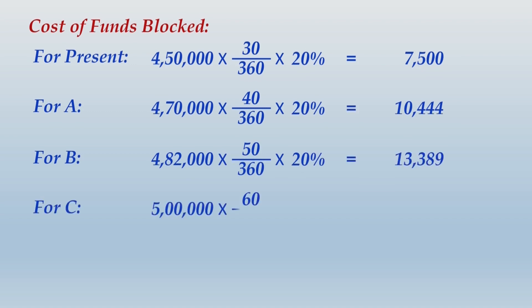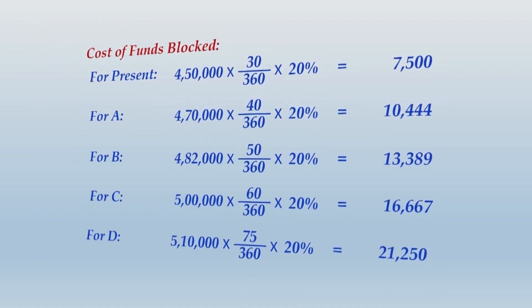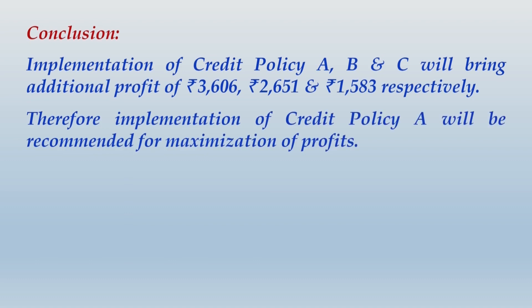We find that policy A is the most profitable one. In your conclusion, you may write: implementation of credit policy A, B, and C will bring additional profit of Rs. 3,606, Rs. 2,651, and Rs. 1,583 respectively. Therefore, implementation of credit policy A will be recommended for maximization of profits.